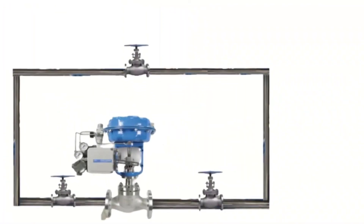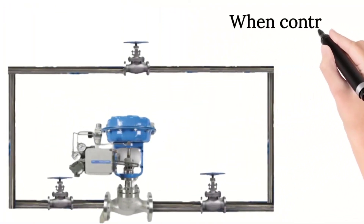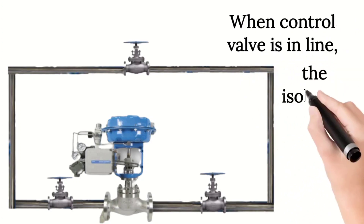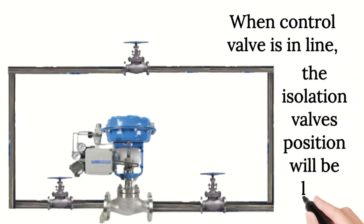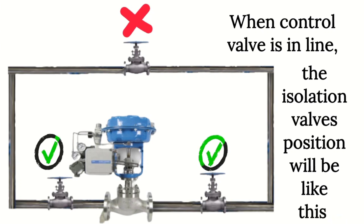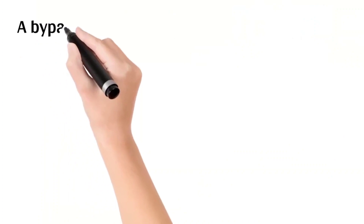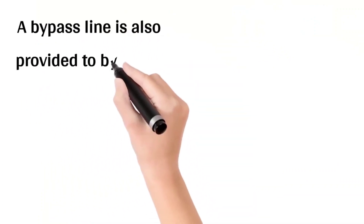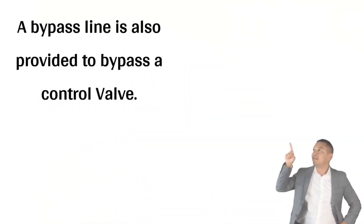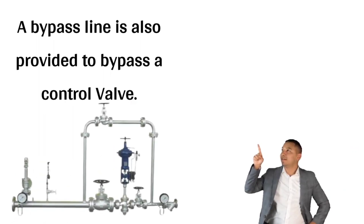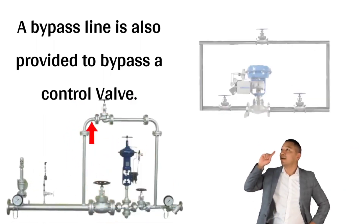When we take a control valve in line, the isolation valve positions will be as shown in the image. The bypass isolation valve is kept in the closed position. The isolation valves before and after the control valve should be in the open position. A bypass line is also provided with the control valve. Sometimes we need to repair the control valve, so a bypass line is provided.